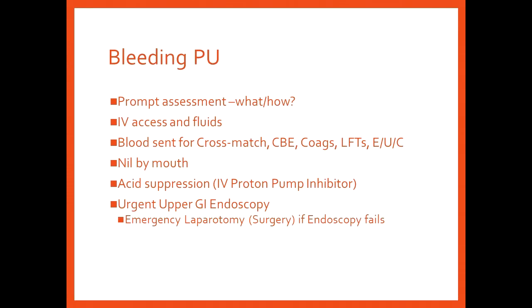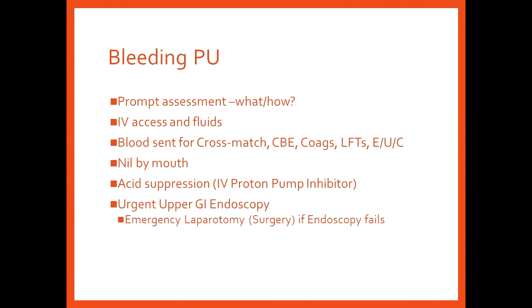You're going to send the blood for a cross-match. At the same time, you're going to check their hemoglobin, their platelets on a CBE. You're going to check they don't have a coagulopathy, which most of them won't, using coagulation studies. Checking their liver function tests and checking their urea and creatinine as well to make sure they're not having an acute kidney injury or require electrolyte replacement. You make them nil by mouth because you don't want anything that they potentially could eat to trigger that ulcer to bleed further or inhibit that healing process. You suppress their acid production with an intravenous proton pump inhibitor, classically pantoprazole, and then you arrange for an urgent upper GI endoscopy. Or if it fails, a laparotomy or laparoscopy.